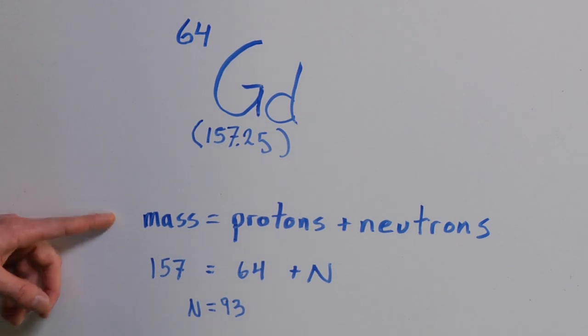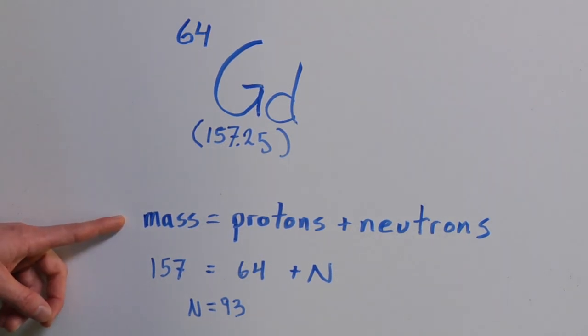So if we rewrite our equation with the actual numbers in there, 157 equals 64 plus the number of neutrons, or the number of neutrons equals 93.